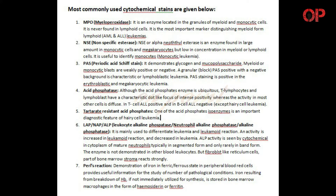2. NSE - Nonspecific esterase, or alpha-naphthyl esterase, is an enzyme found in large amounts in monocytic cells and megakaryocytes, but low in concentration in myeloid or lymphoid cells. It is useful to identify monocytes and monocytic leukemia.